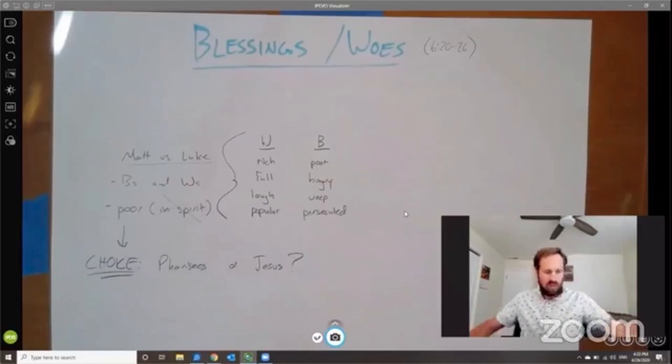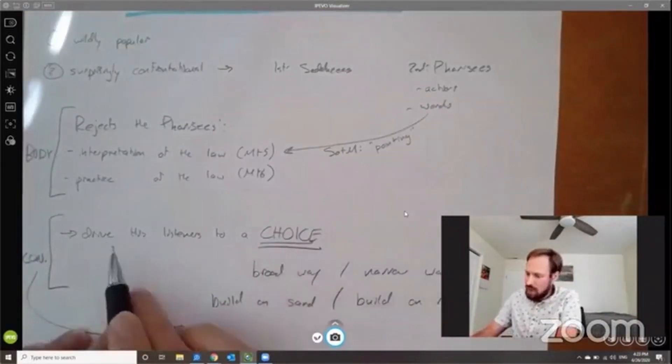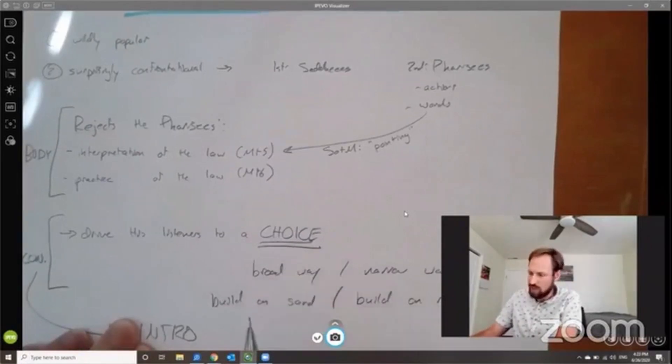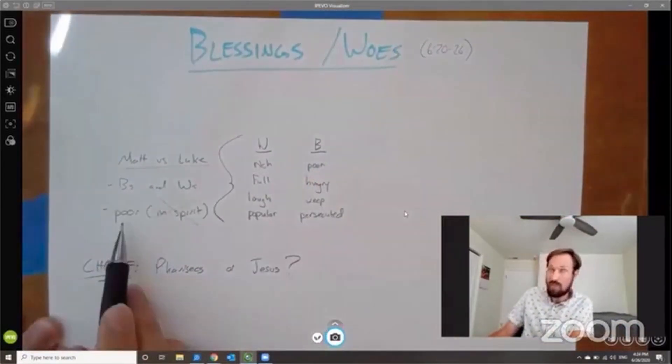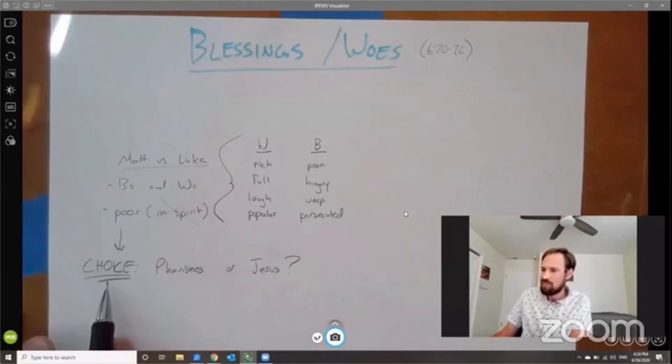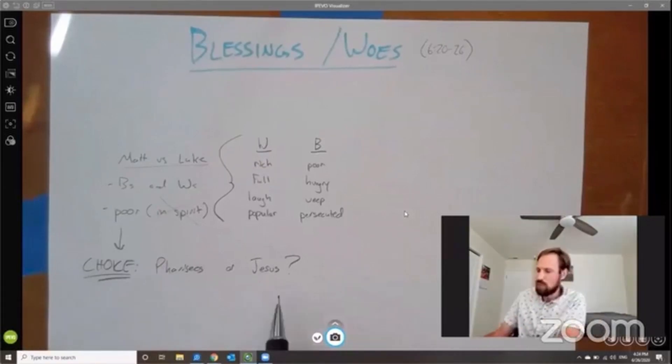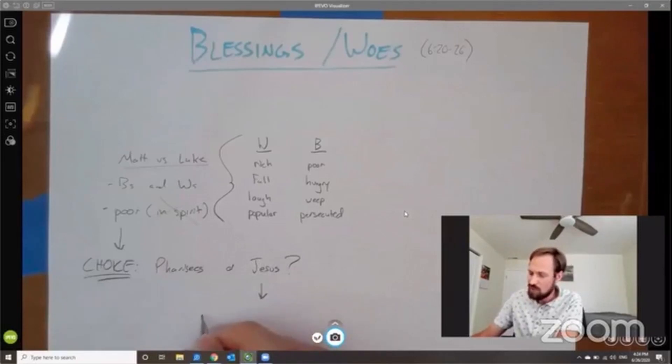Remember, we've looked at that choice already, how Jesus concludes his sermon with that choice. Are you going to follow the Pharisees, or are you going to follow me? And now I think in the Beatitudes as well, Jesus, or I guess Luke focuses Jesus' words on the physical in order to highlight this, highlight this choice between the Pharisees and Jesus, specifically because when you choose Jesus over the Pharisees, when you reject the Pharisees and choose Jesus, it's going to lead to physical consequences.